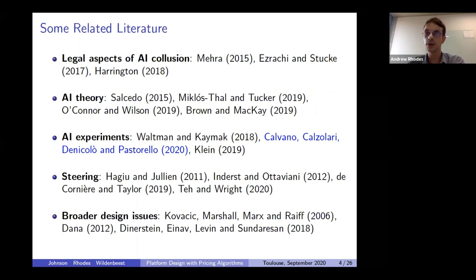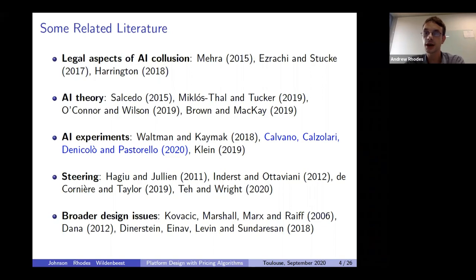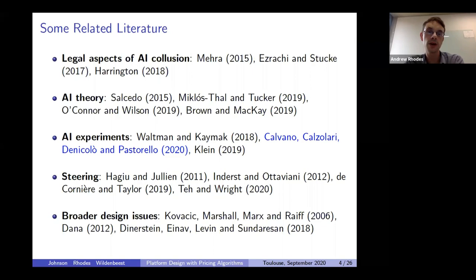Given the short talk, I won't say much about the literature, but the theory part relates to a literature on steering. One important difference is that we look at steering in contexts where sellers may be colluding. The second part of the talk is very related to a recent paper by Calvano and co-authors, who simulate AI pricing algorithms and show they learn to sustain high prices by playing collusive reward-punishment strategies. We take a similar setting but look at how a platform might design the marketplace to undermine those collusive strategies.